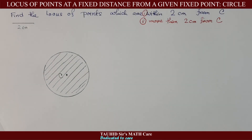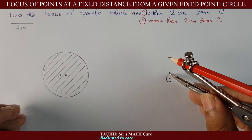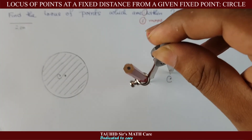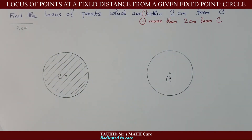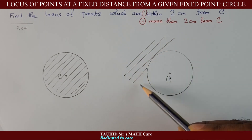The second part of the question asks you to find the locus of points which are more than two centimeters from C. For this part, we draw the same circle with center C and radius two centimeters. But this time, since our points should be more than two centimeters from C, we shade the area outside the circle.